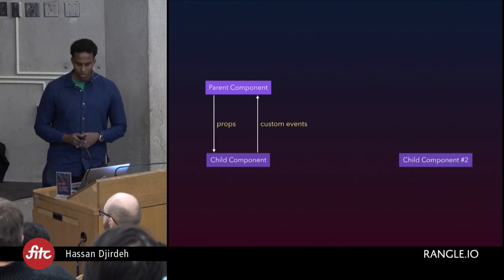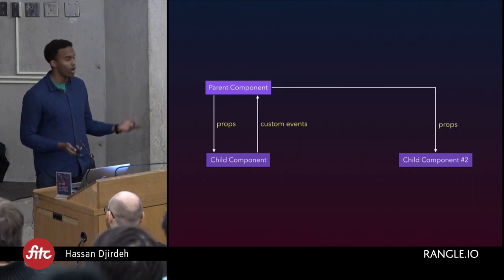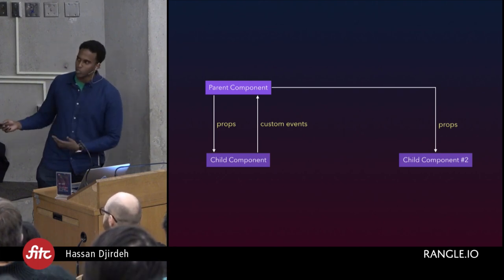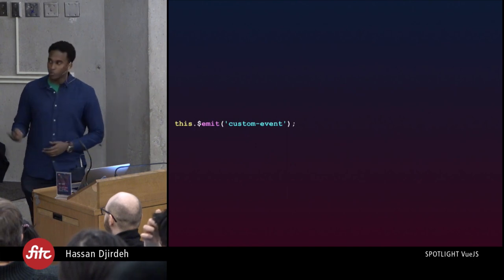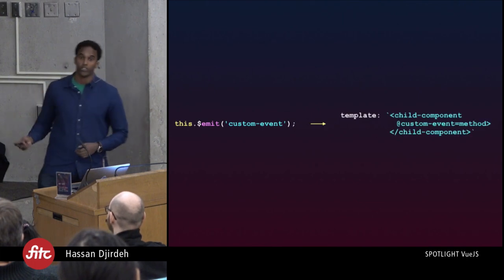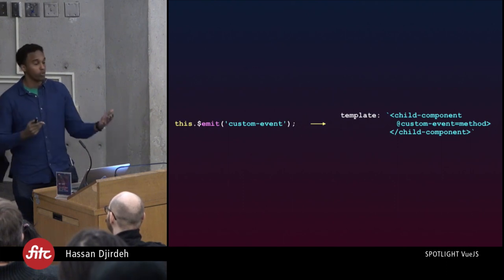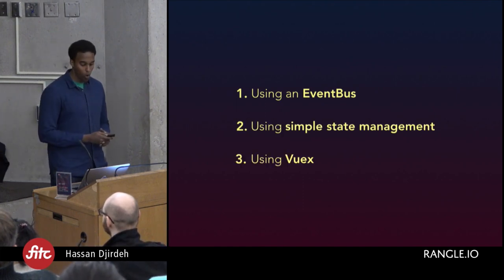What if our app grew by just a single component — a sibling to the first child component? Passing data from the parent via props still works fine, but how would we pass information between the two child components? Custom events won't work here because the listener has to be declared where the child component is being rendered, and two isolated unrelated components aren't rendered within one another. With Vue, there are a few different ways to handle this, grouped into three main buckets: a Global Event Bus, a simple form of state management, or the Flux-like library Vuex.